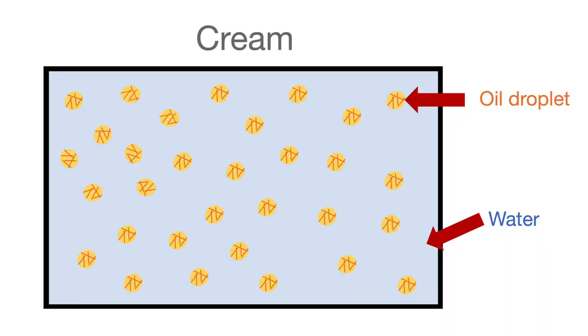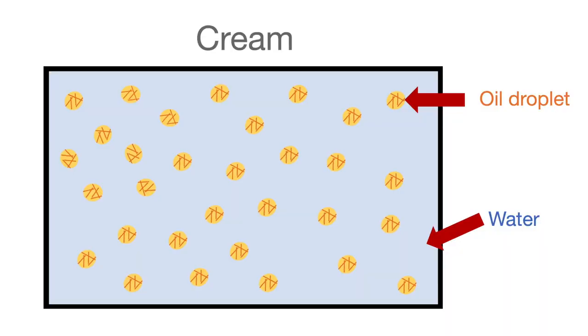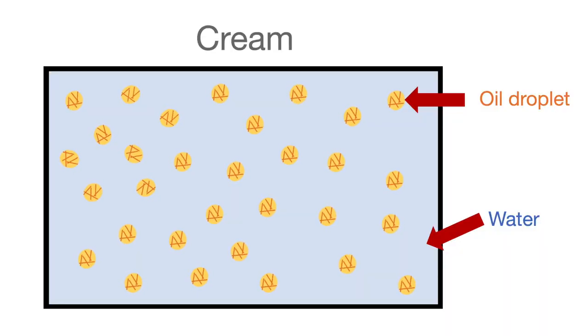If we want to understand how something like cream gets transformed into butter, we really have to focus on what cream is in the first place — what is the structure of cream, or if we tossed it under a microscope, what will we see? Cream is actually pretty interesting because it has these tiny oil droplets held within a water phase, and this is a very special structure in food. We call this an emulsion.